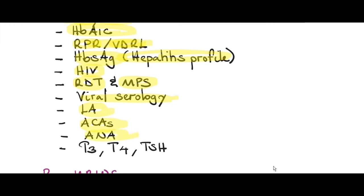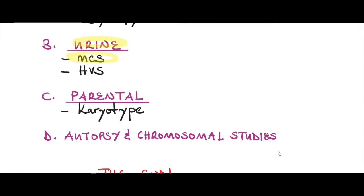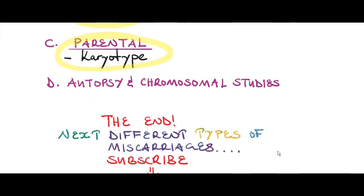For immunological disorders, do a lupus anticoagulant antibody test, an anti-cardiolipin antibody test, or antinuclear antibodies. For endocrine disorders, especially hypothyroidism or hyperthyroidism, do T3, T4, and thyroid stimulating hormone tests. Also do a urine microscopy, culture and sensitivity, as well as a high vaginal swab — untreated urinary tract infections, sexually transmitted infections, and asymptomatic bacteriuria can cause miscarriages. A parental karyotype can be done to study chromosomal abnormalities, and for an expelled fetus, autopsy and chromosomal studies can be performed.